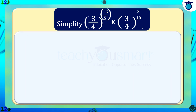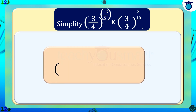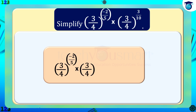Therefore, three by four whole raised to minus 2 by 5 multiplied by three by four whole raised to 3 by 10 equals four by three whole raised to 1 by 10.